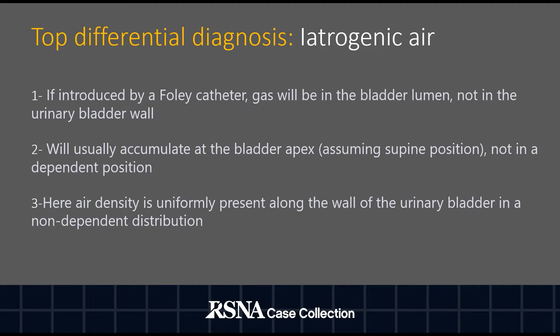Some top differential diagnoses to consider: first is iatrogenic air. If introduced by a Foley catheter, gas will be in the bladder lumen, not in the urinary bladder wall, and will usually accumulate at the bladder apex, not in a dependent position. Here, air density is uniformly present along the wall of the urinary bladder in a non-dependent distribution.